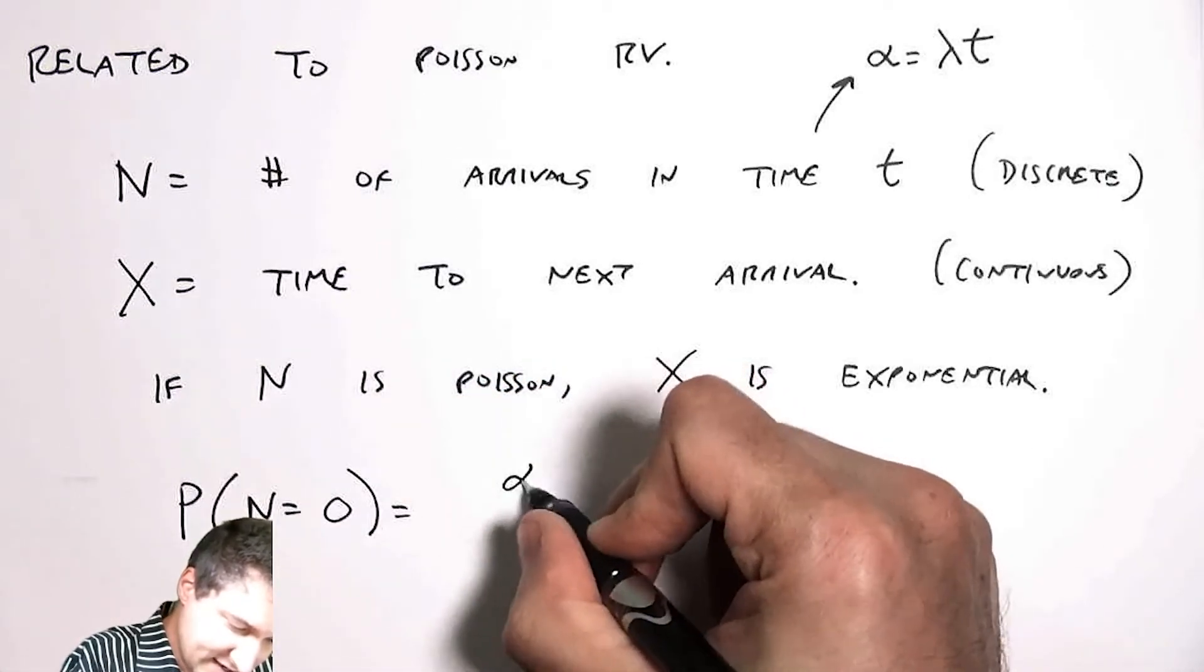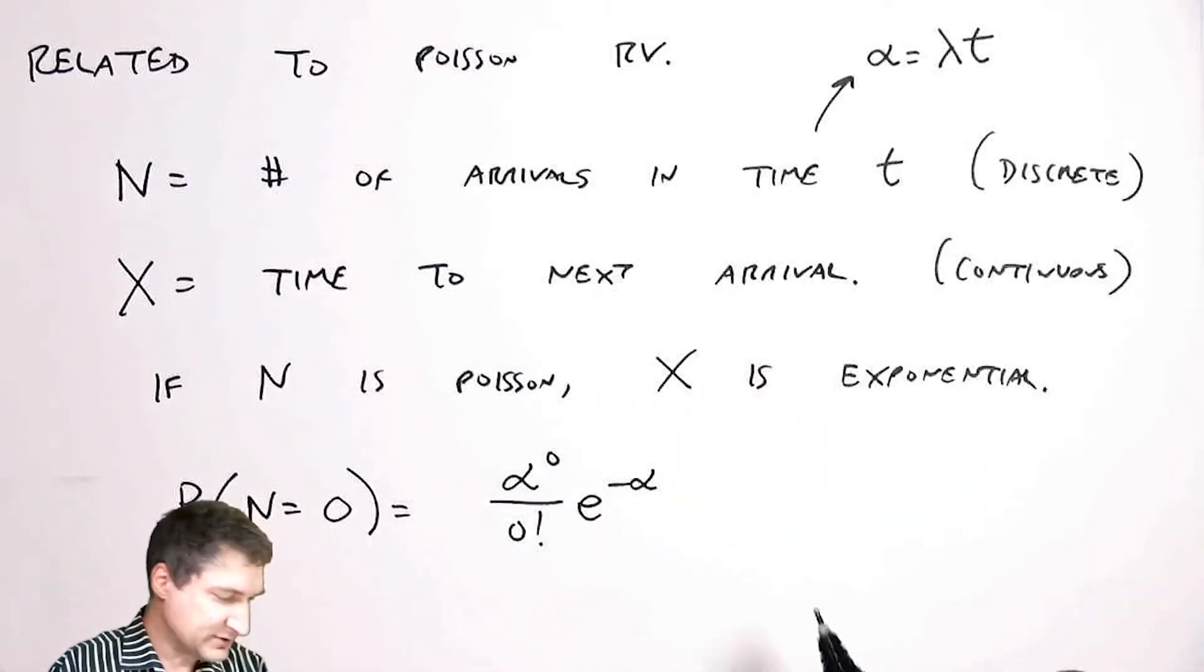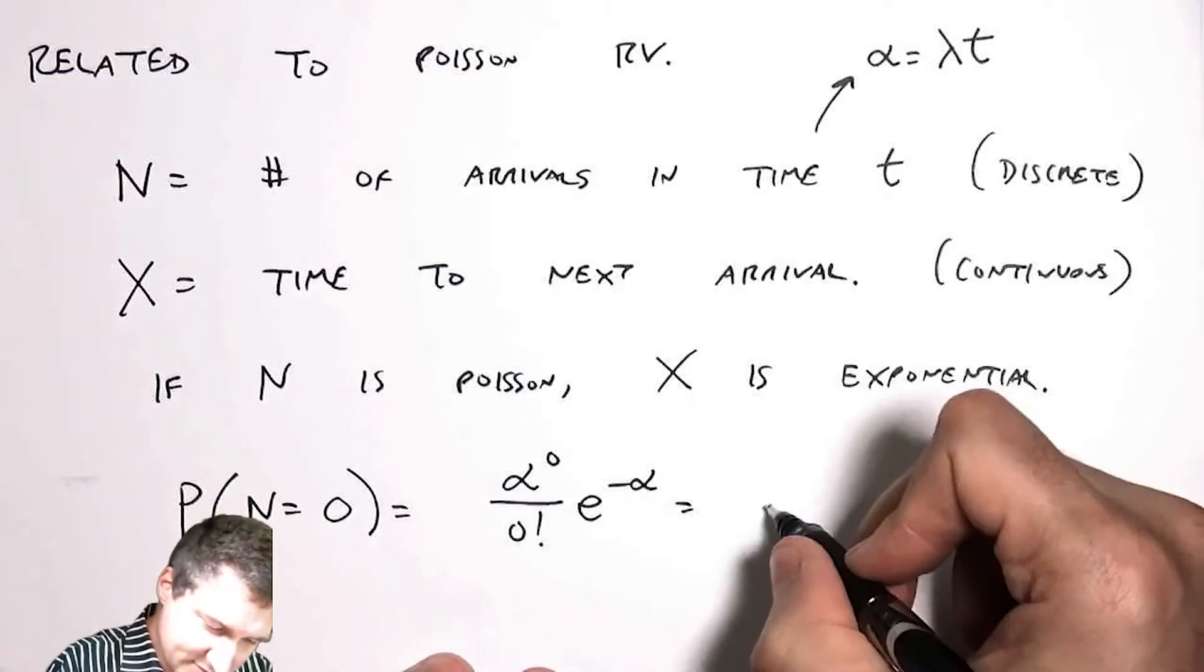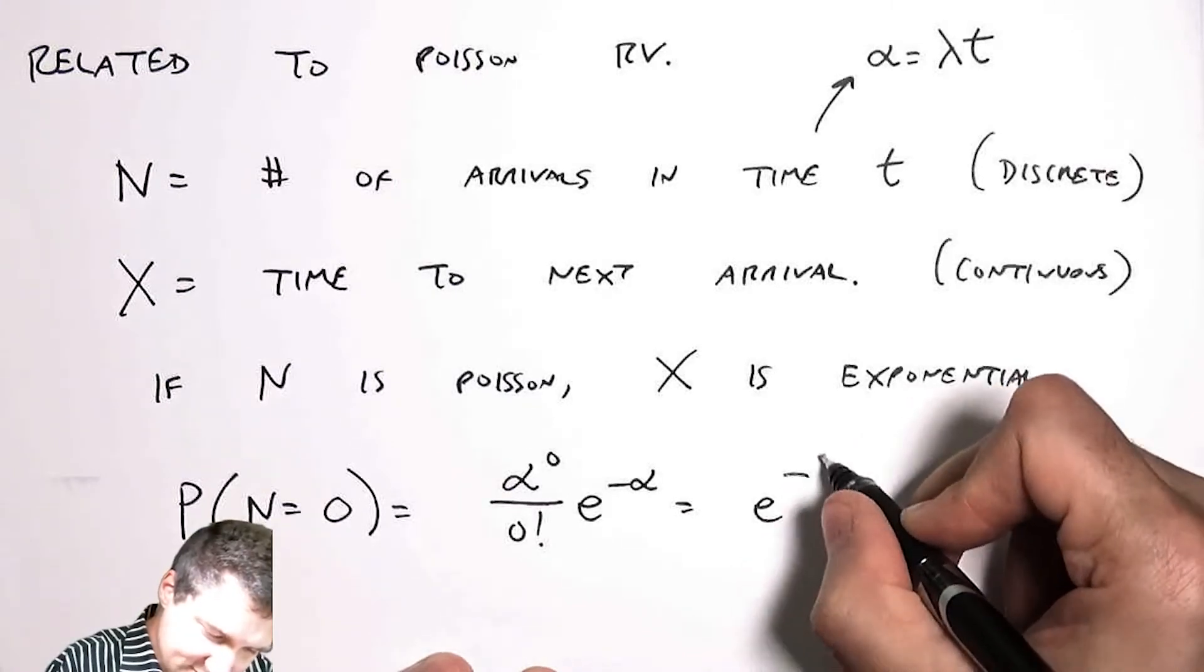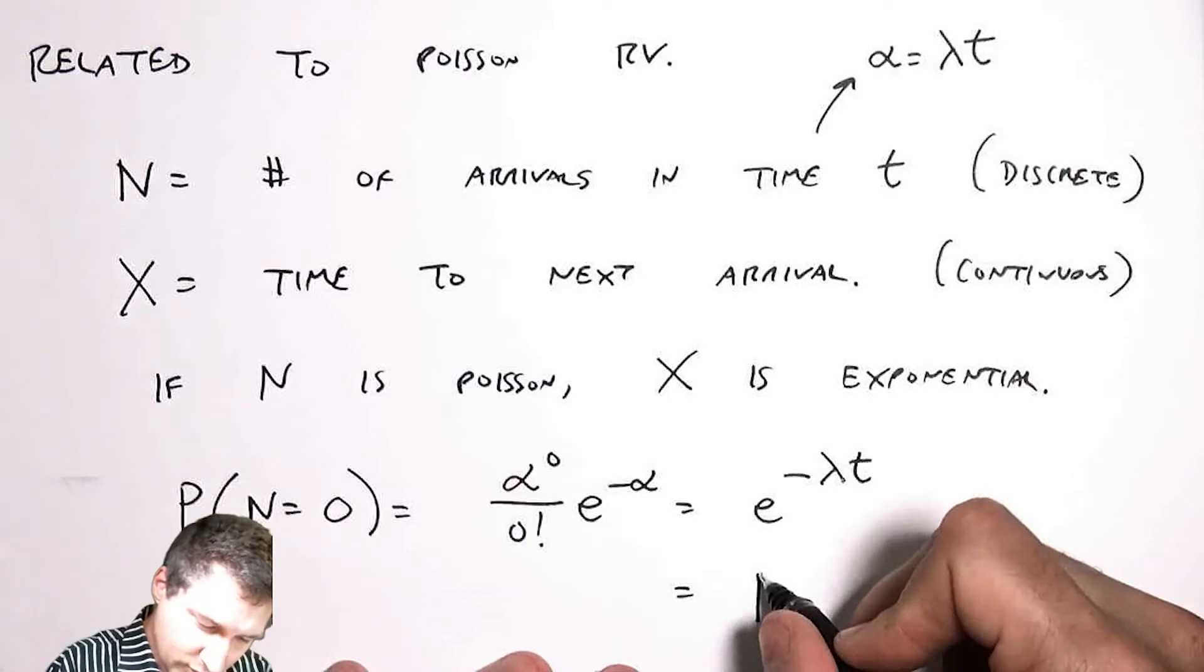It's alpha to the 0 over 0 factorial e to the minus alpha. That's how we define the Poisson random variable. In this case alpha is lambda t, and I can see that this is exactly what I talked about on the previous slide.